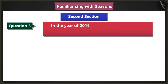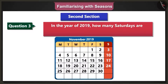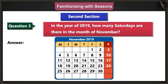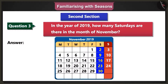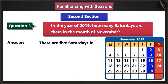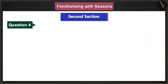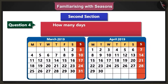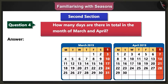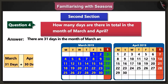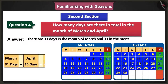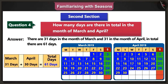Third question: In the year 2019, how many Saturdays are there in the month of November? In the year 2019, in the month of November, Saturdays come on the 2nd, 9th, 16th, 23rd and the 30th. Therefore, there are 5 Saturdays in this month. Fourth question: How many days are there in total in the month of March and April? There are 31 days in March and 30 days in April. When we add both, we get a total of 61 days.